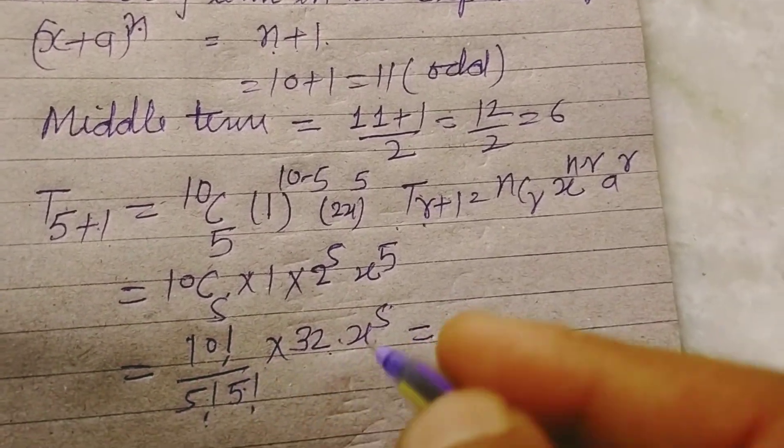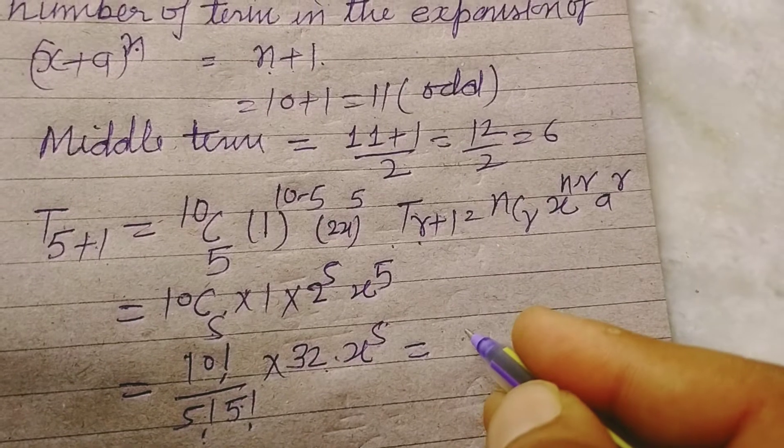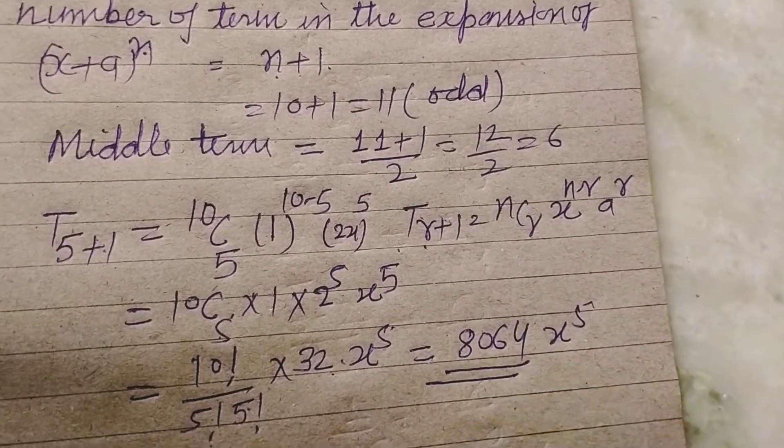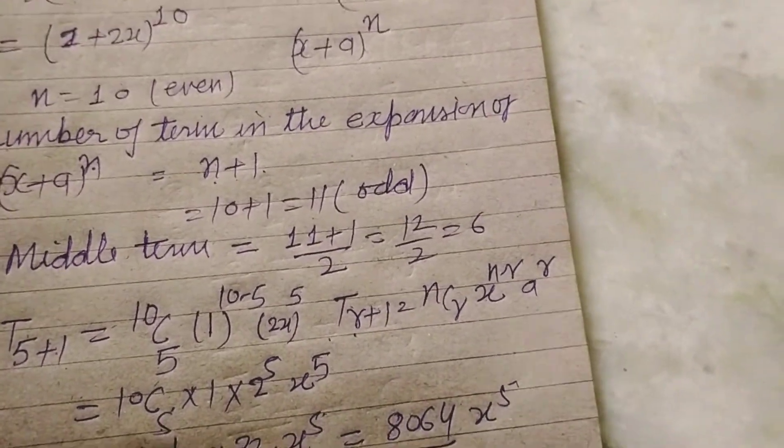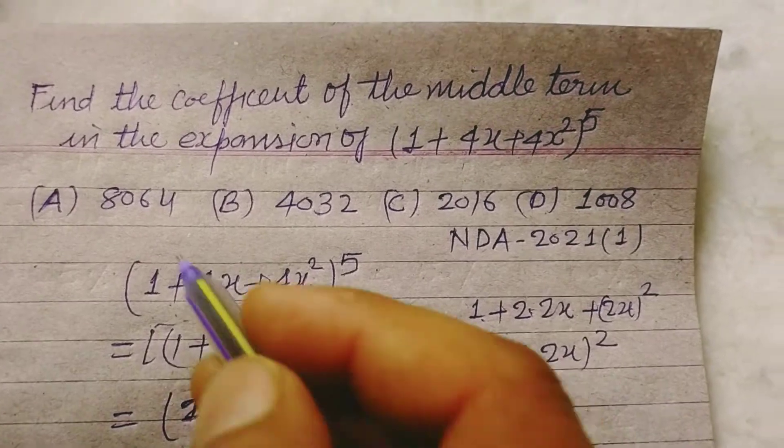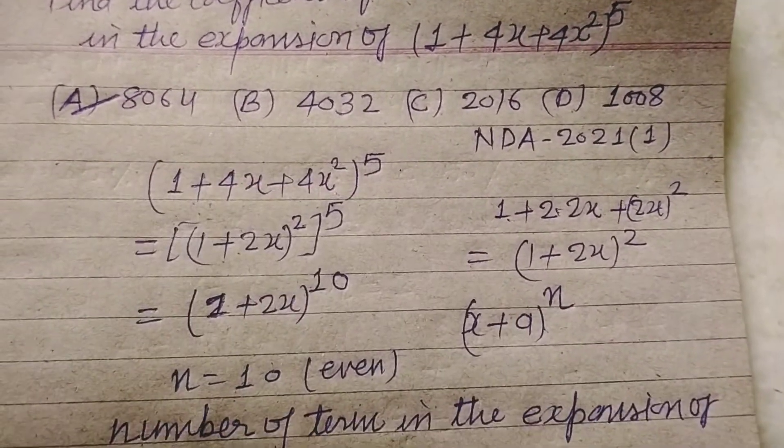On solving this, we can get the value 8064 x to the power 5. So the numerical coefficient in this expansion will be 8064.